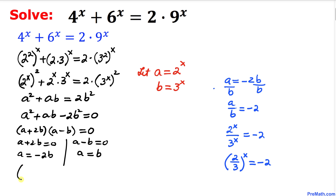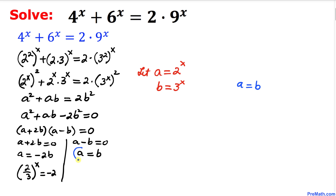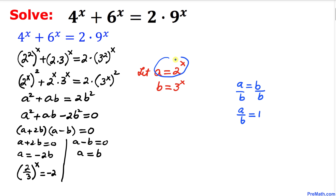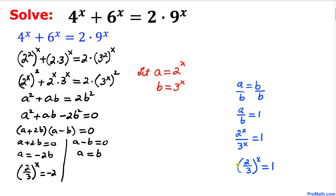For the second equation a = b, dividing both sides by b gives a/b = 1. Since a = 2^x and b = 3^x, we get 2^x / 3^x = 1, or (2/3)^x = 1.